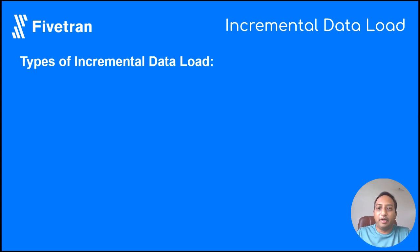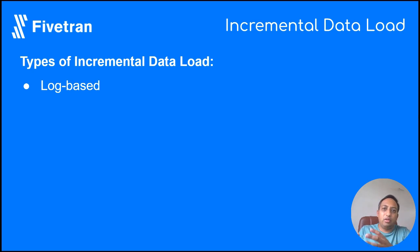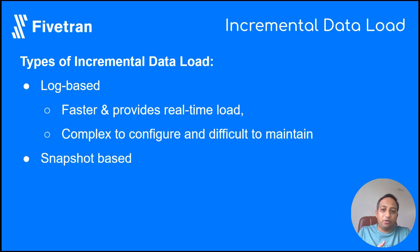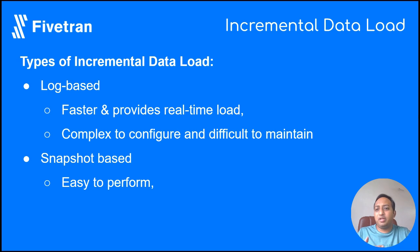There are two types of incremental data load. Log-based incremental data load uses transaction logs to capture changes made on the data and implement them onto the destination database. Log-based offers real-time data load and is faster, but comes with complexity and dependency on transaction logs. Snapshot-based takes a snapshot of the changes done on the source database, compares them to the destination, and applies those changes. It's easy to perform but slower and doesn't offer real-time updates.